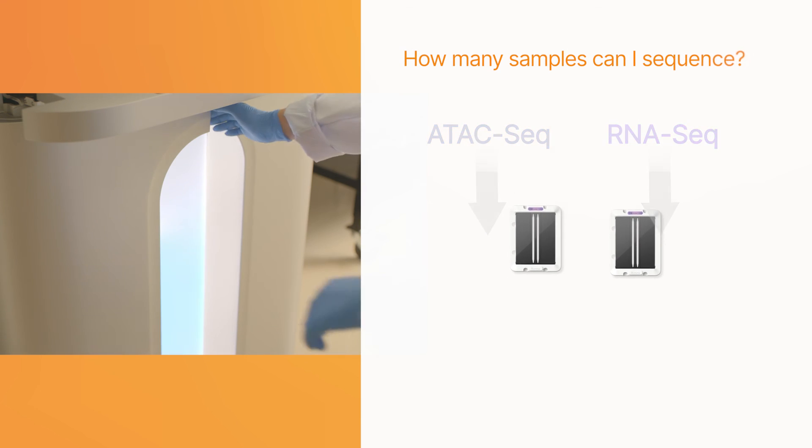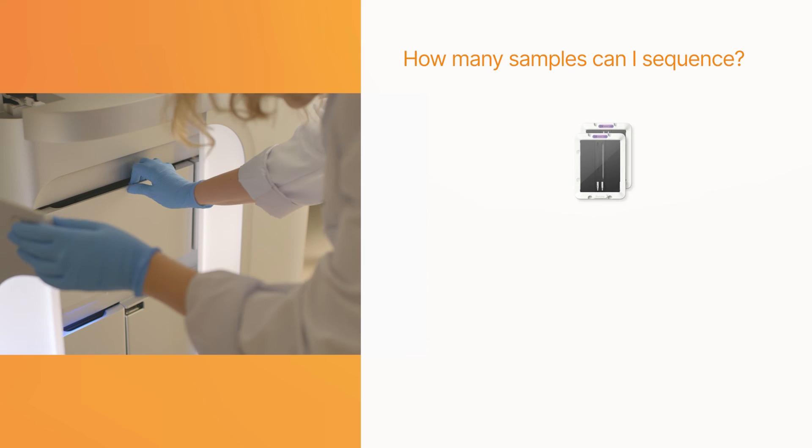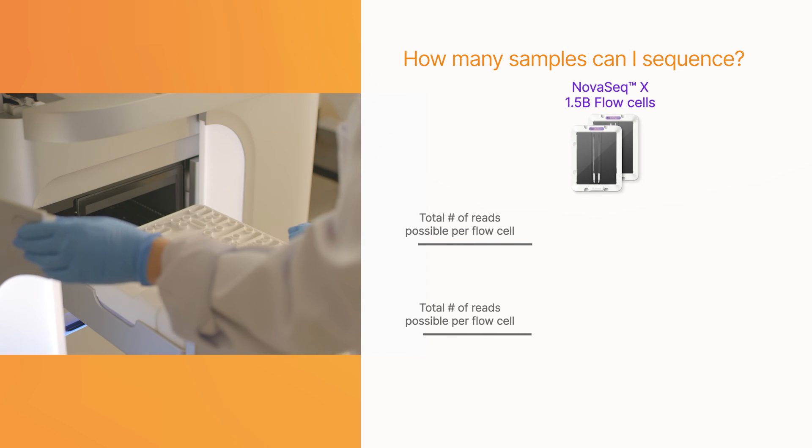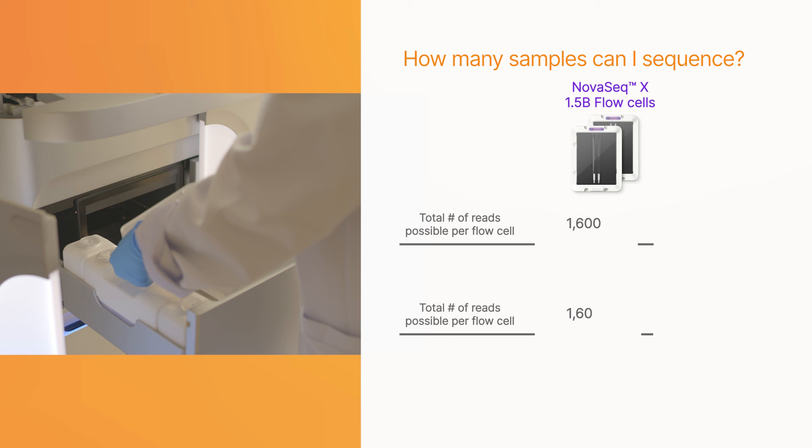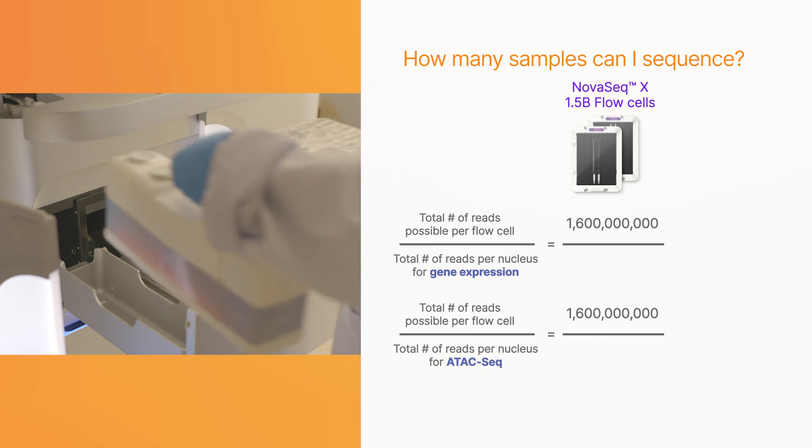You can determine how many total cells that you can sequence by dividing the total number of reads that are possible on an Illumina flow cell by the number of reads required per cell.